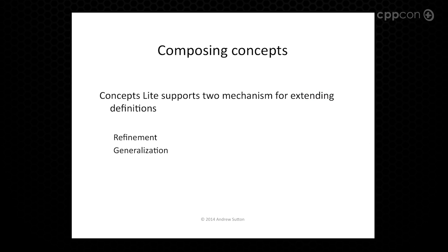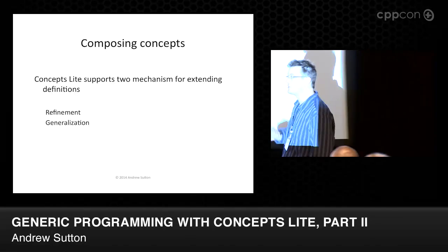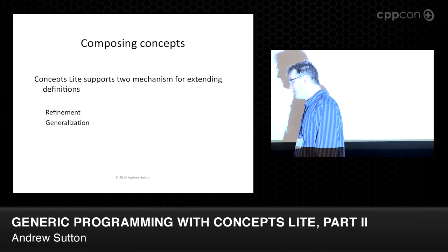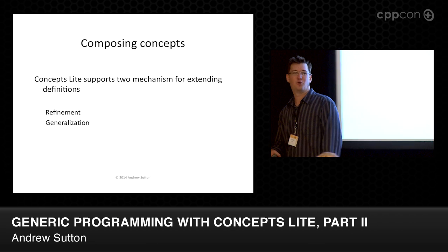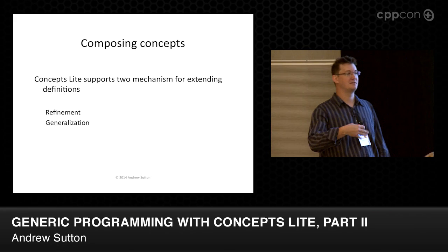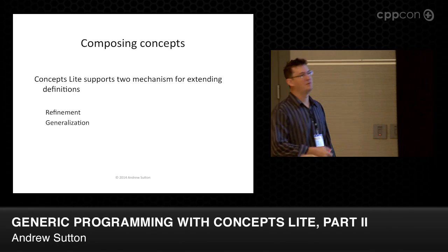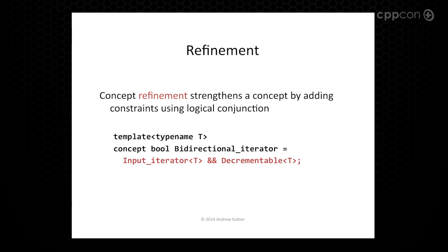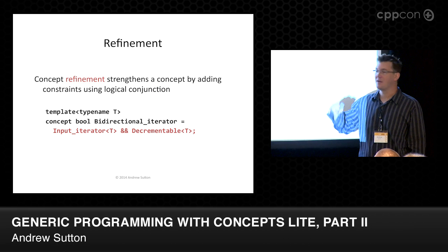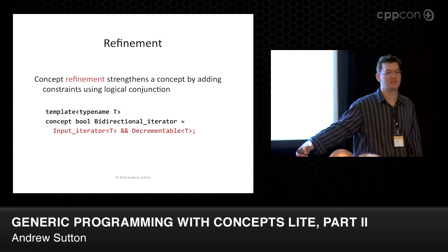The rest of this talk is about overloading and specialization — the interesting stuff. ConceptsLite supports two different methods of opening up a definition for extension: refinement and generalization. Refinement you strengthen the concept by adding additional requirements. So if we have an input_iterator, we can define a bidirectional_iterator by taking an input_iterator and then adding a set of requirements for decrement. So a bidirectional iterator refines input iterator because it has more constraints — it's an input iterator plus a little bit more.